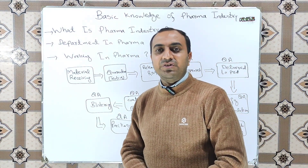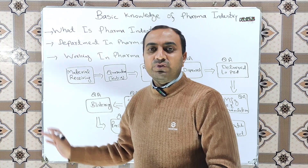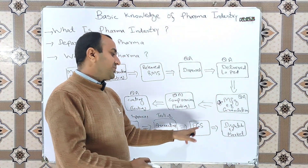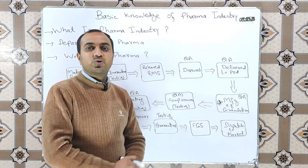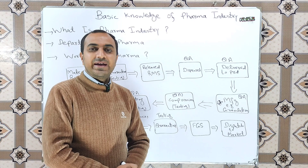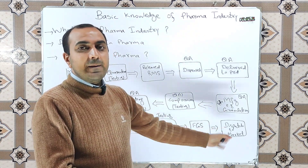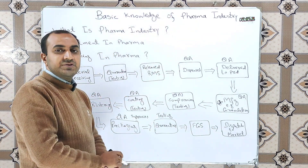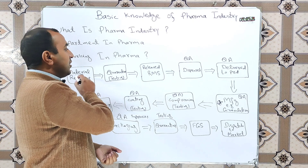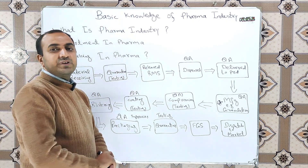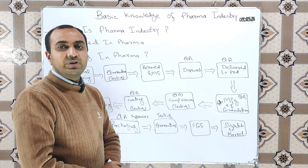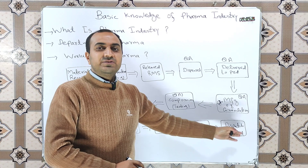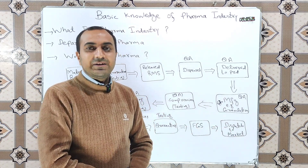When the batch is released, it is shifted to the finished goods store, the FGS store. From the FGS store, the batch is dispatched to the market. This flow is unidirectional — we start from one process, beginning from raw material receipt, and the finished product is ultimately dispatched to the market.